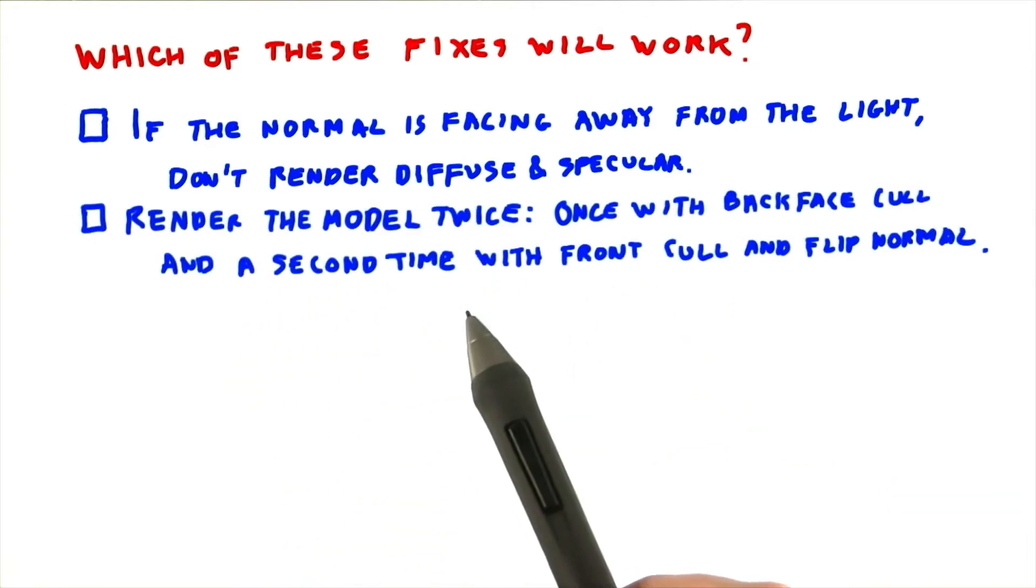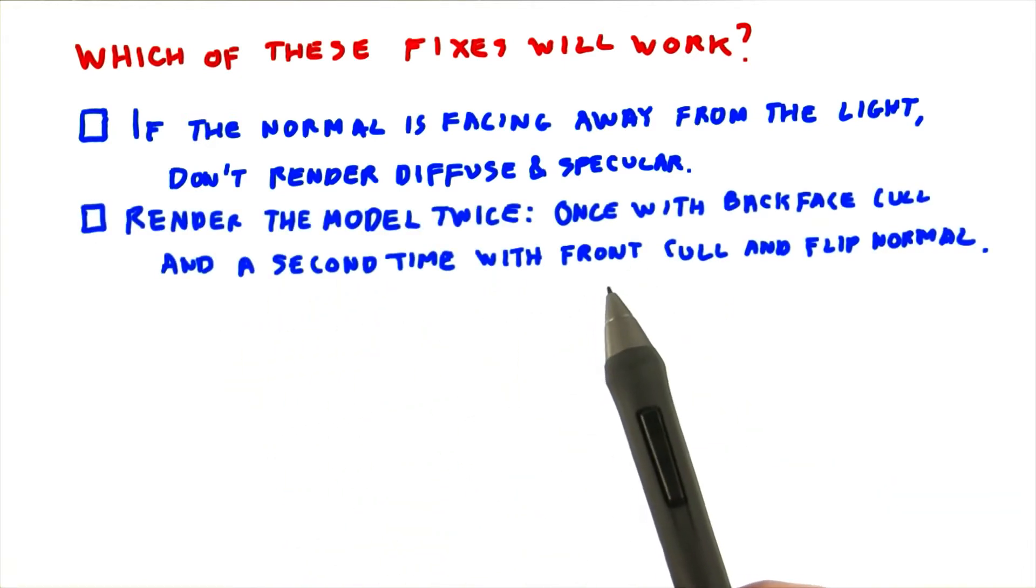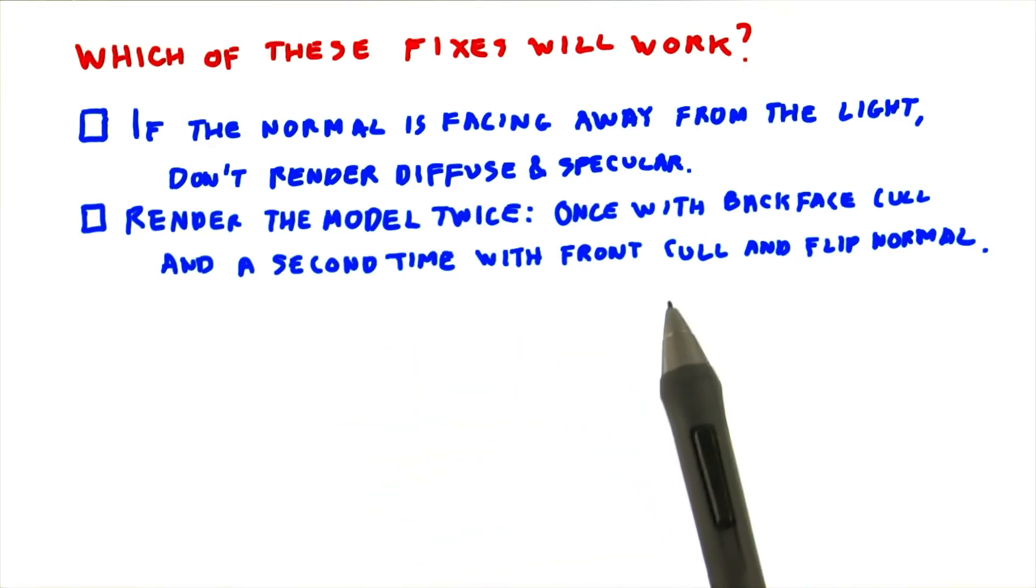Render the model twice: once with back face culling on and a second time with front face culling on and flip each shaded normal direction.